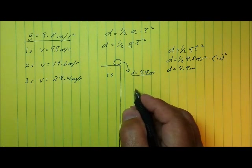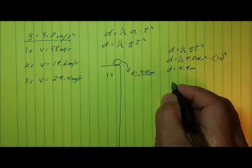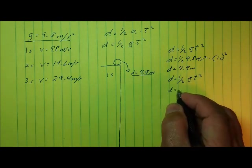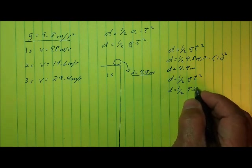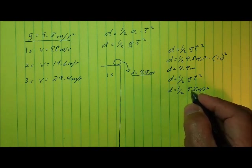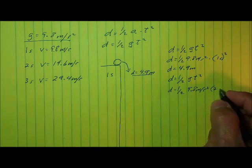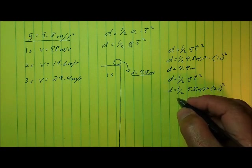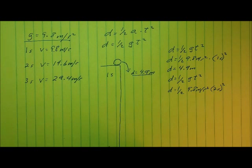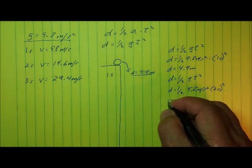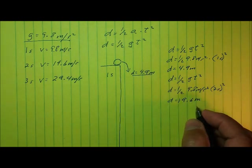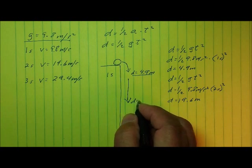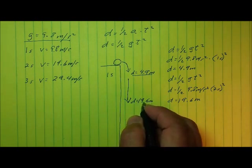We can do the same thing for two seconds. How far will it have fallen after two seconds? D equals one-half g t squared. g is 9.8 meters per second squared, the value of acceleration due to gravity, and the time is two seconds, and we're going to square that. So two squared is four, multiply that by 9.8, divide your answer by two, and you get 19.6 meters. After two seconds, this object would have fallen a total of 19.6 meters.